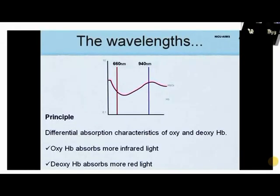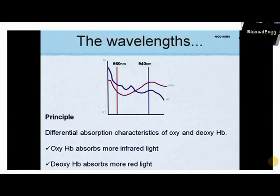The principle of pulse oximetry is based on the differential absorption characteristics of oxygenated (red) and deoxygenated (dark) hemoglobin. Oxygenated hemoglobin absorbs more infrared light, allowing more red light to pass through, whereas deoxygenated hemoglobin absorbs more red light, allowing more infrared light to pass through.